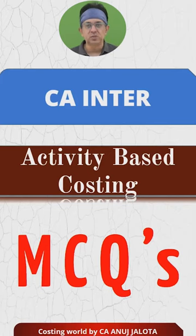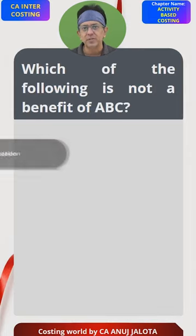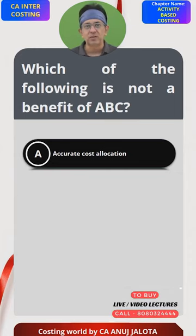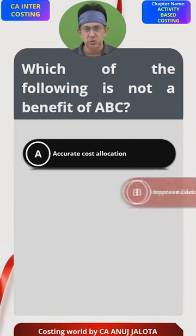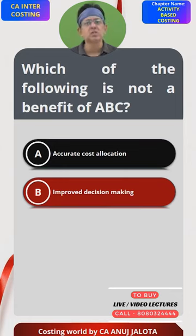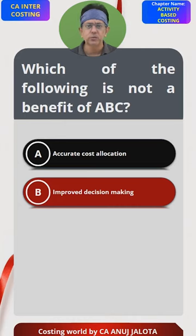Which of the following is not a benefit of activity based costing? Option A: accurate cost allocation — that is of course a benefit; the entire chapter of activity based costing is about finding the true overhead cost. Option B: improved decision making — this is also a benefit, because if your cost is properly determined, any decision based on cost will also be correct.